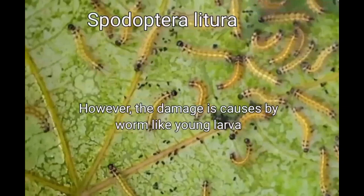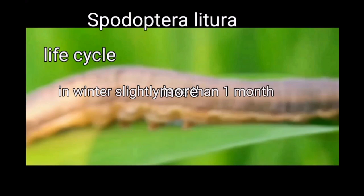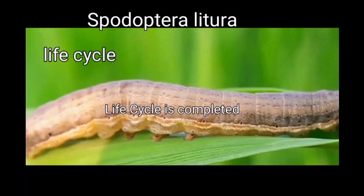Now let us discuss the life cycle of Spodoptera litura. It completes 12 generations every year. Each generation lasts about one month — slightly more than one month in winter and slightly less than one month in summer. The life cycle is completed as egg, larva, pupa, and adult.